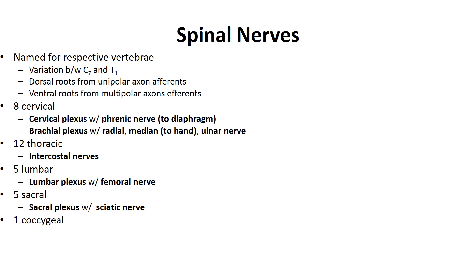Spinal nerves are named for their respective vertebrae. A spinal nerve is composed of bundles called fascicles, and each fascicle is composed of numerous neurons. The tissue layers surrounding the nerves are the epineurium (outer), perineurium (middle), and endoneurium (inner). There are 31 pairs of spinal nerves, and all spinal nerves are mixed nerves.